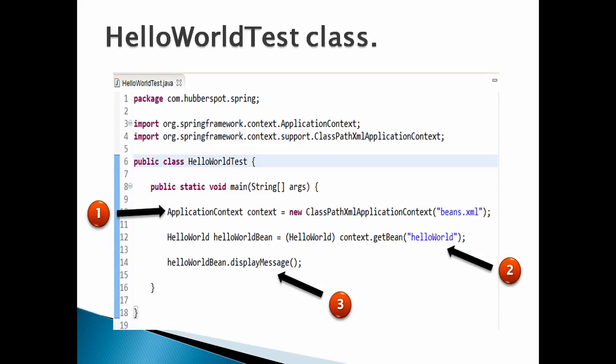Now let's create the HelloWorldTest class to demonstrate our example. Number 1: ApplicationContext is a Spring interface that creates beans as per configurations provided by beans.xml. It provides all the methods that BeanFactory provides, loads file resources in a generic manner, helps publish events to registered listeners, and provides quick support for internationalization. We are using the concrete implementation ClassPathXmlApplicationContext because this bean factory reads an XML file placed in the classpath of the application.